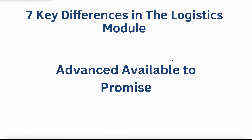The next difference is the introduction of the Advanced Available to Promise module. In ECC, you can check product availability, product allocation, and back orders with the Available to Promise module. The Advanced Available to Promise functionality in S4HANA represents an enhanced and more sophisticated version, using the Unified Data Model where data is stored in a single table — ACDOCA. This allows for real-time visibility into ATP information, and it also uses automation for functionalities such as releasing items for delivery, checking stock availability in alternative plants, and performing MAS availability checks.